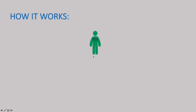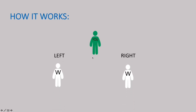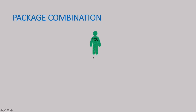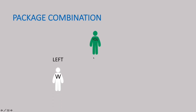This is you. You have a white package on your left and another white package on your right. How about combinations of packages? This is you with a white package on your left and a black package on your right.